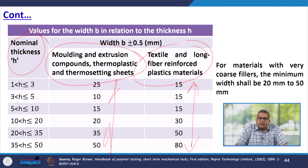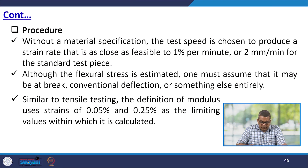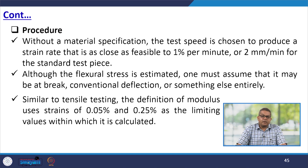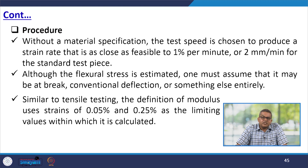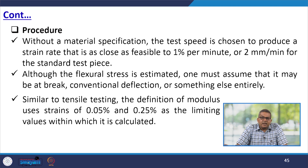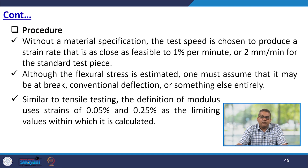Materials with very coarse filler must have a minimum width of 20 mm to 50 mm. Without a material specification, the test speed is chosen to produce a strain rate as close as feasible to 1% per minute, or 2 mm per minute for the standard test piece. Although the flexural stress is estimated, one must assume it may be at break, conventional deflection, or something else. Similar to tensile testing, the definition of modulus uses strains of 0.05% and 0.25% as the limiting values within which it is calculated, and the precision of the test component and test equipment are severely constrained as a result.